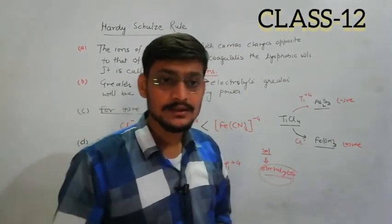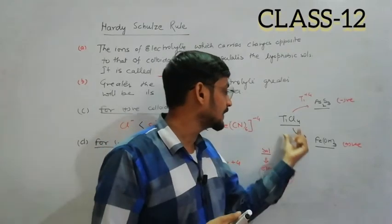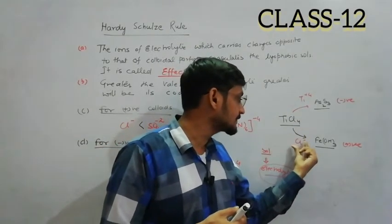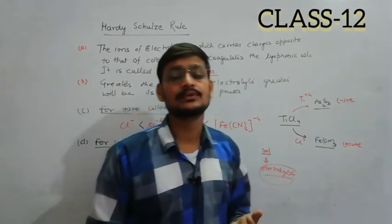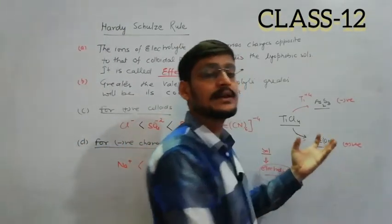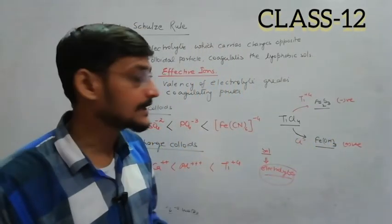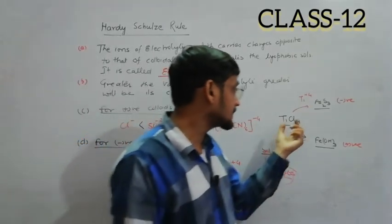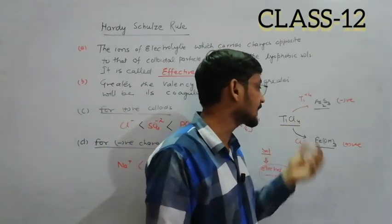Its negative charge, the Cl minus from the electrolyte, will neutralize the positive charge and coagulate it, meaning the colloidal solution will form a precipitate.